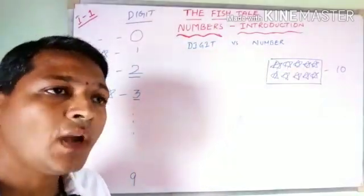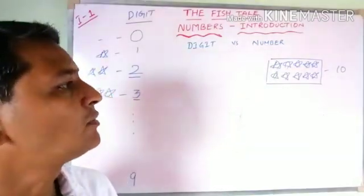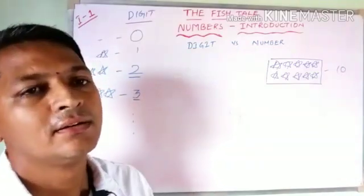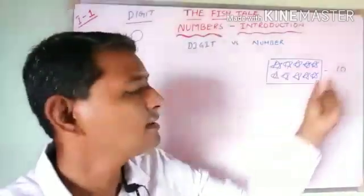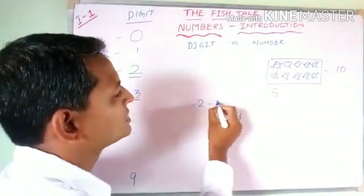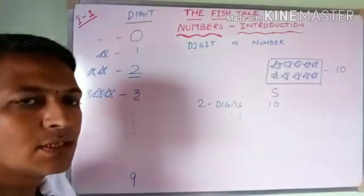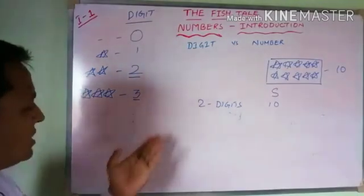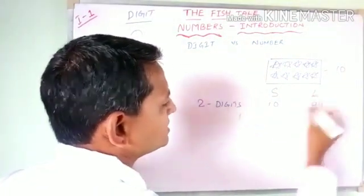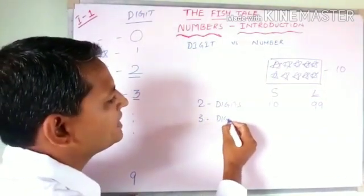Now we are trying to understand how different numbers can be formed using digits. Here, 10 is the smallest number that can be formed using two digits from 0 to 9. What is the speciality of 10? It is the smallest two-digit number. Can you tell me what is the largest two-digit number that can be formed? It is 99.